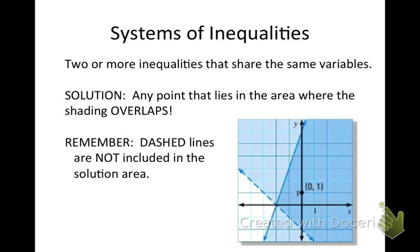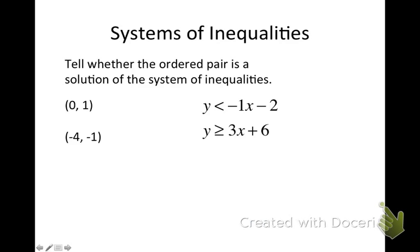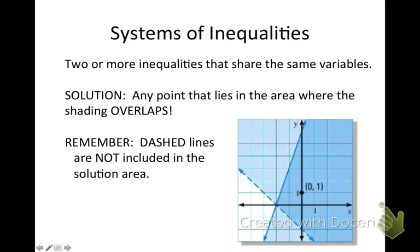Looking at our graph here, the point (0, 1) is in the dark blue area where the two shaded areas overlap. That is called the solution region.